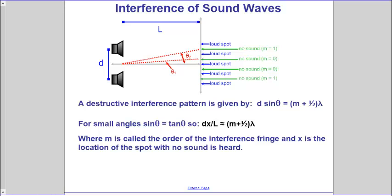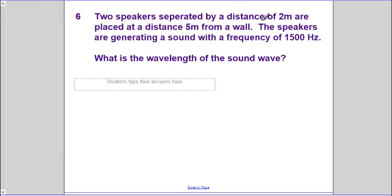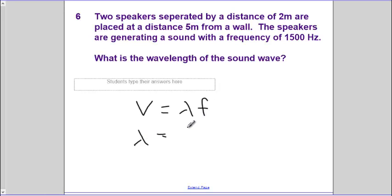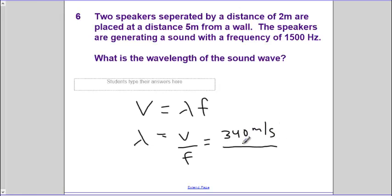The two speakers are separated by 2 meters and placed 5 meters from a wall. The speakers generate sound at a frequency of 1500 Hz. What is the wavelength of sound? Using the wave equation, velocity equals lambda times frequency, so wavelength equals velocity divided by frequency. The velocity of sound is 340 meters per second, divided by 1500 Hz, which gives us approximately 0.2 meters of wavelength.